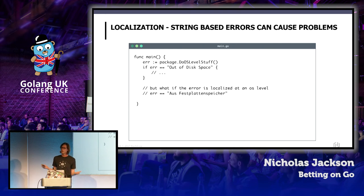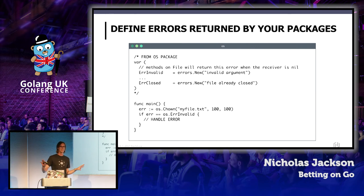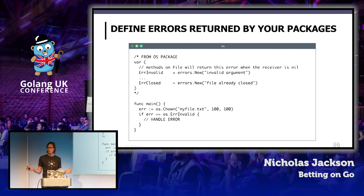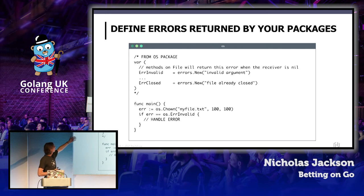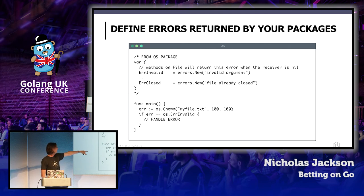The standard library does show some better ways to do this. If you're going to return an error from your package, don't just return a blind error without giving the user a way to do a comparison. The OS package defines things like error-invalid, which is just an instance of error, but gives you the capability of doing a comparison of 'error equals os.error-invalid' rather than grepping for a string like 'invalid argument.'